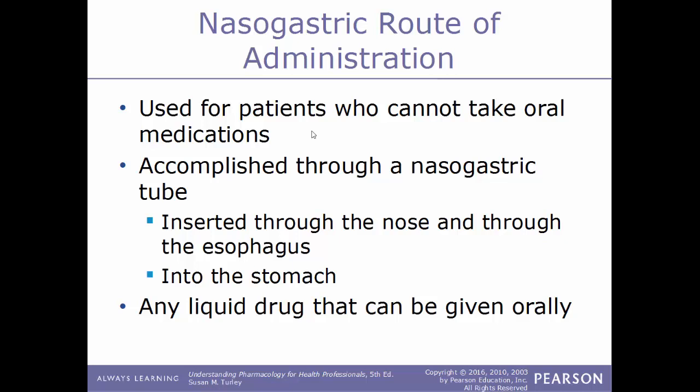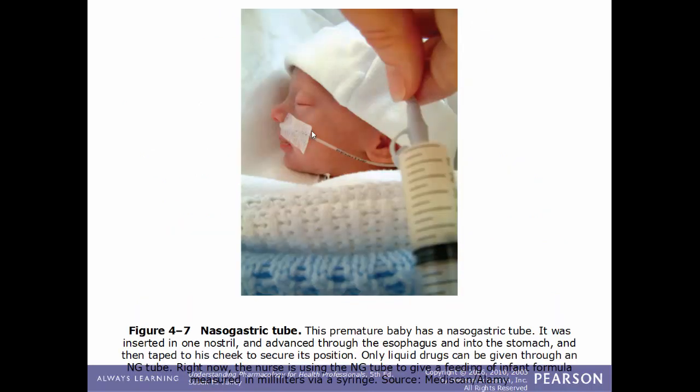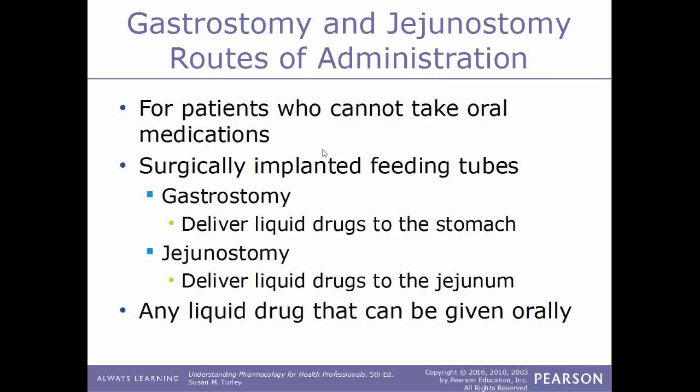The nasogastric route is used for patients who cannot take oral medications. A tube is inserted through the nose, down through the esophagus, and into the stomach. This route can be used for any liquid drug that can be given orally. Premature babies commonly use nasogastric tubes. For patients who can't take oral medications, gastrostomy delivers liquid drugs directly into the stomach, while jejunostomy delivers them to the jejunum — the second part of the small intestine.